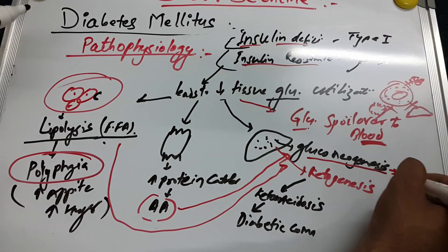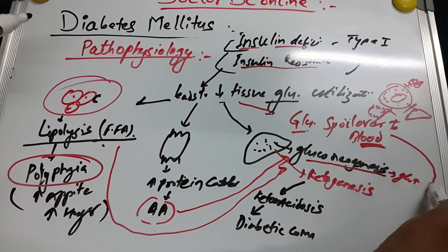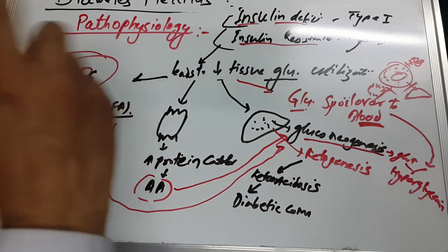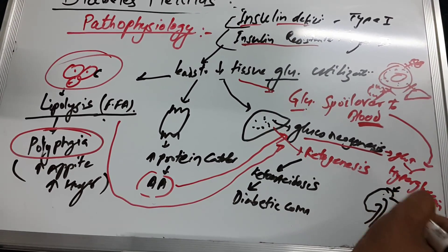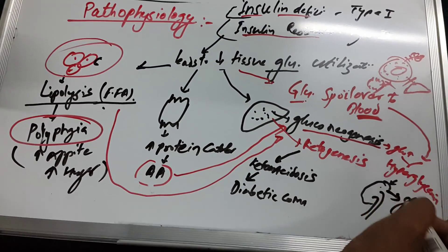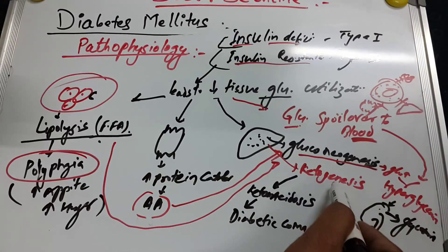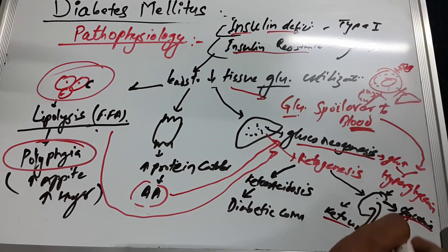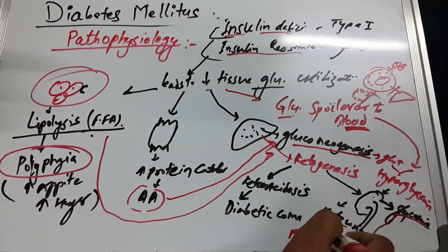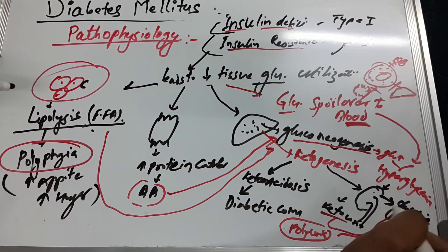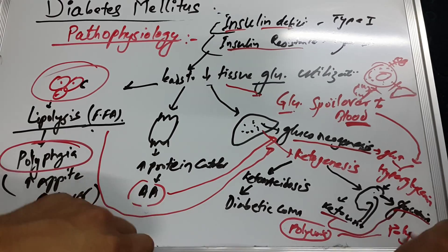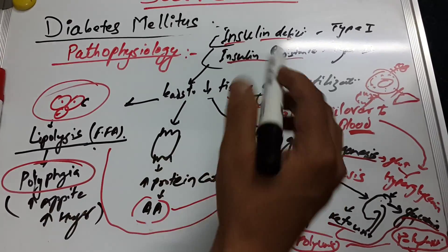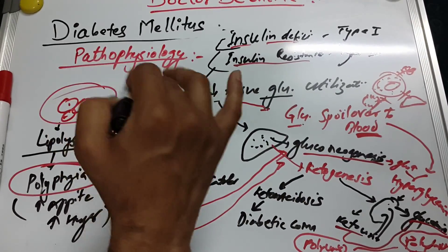Due to high gluconeogenesis, more glucose is formed, and there is already more glucose in the blood. This leads to hyperglycemia — increased blood glucose level. When this glucose goes to the kidney, there is glycosuria. Due to ketogenesis, ketone bodies increase and when they reach the kidney, ketonuria occurs. Due to glycosuria and ketonuria, polyuria occurs — increased urine output. Due to polyuria there is volume depletion, leading to polydipsia — more thirst and dehydration.